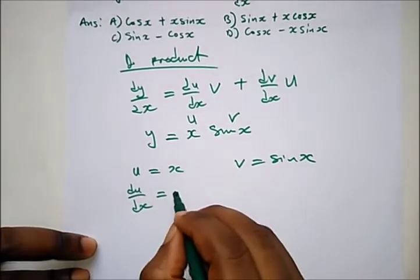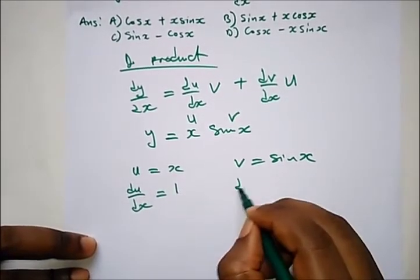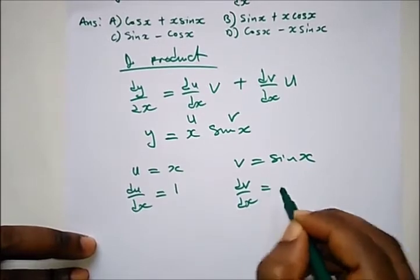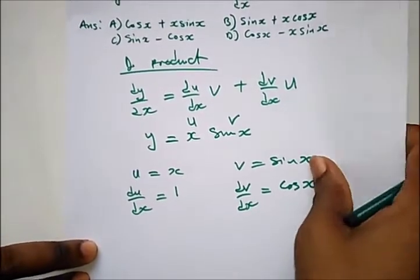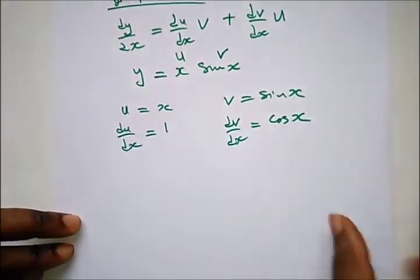du/dx = 1 and dv/dx = cos(x). So here what do we have?